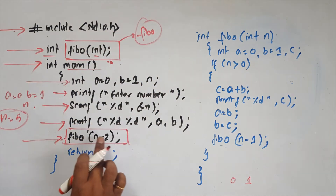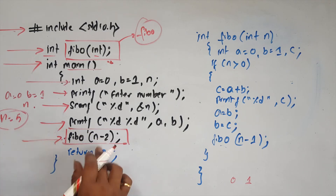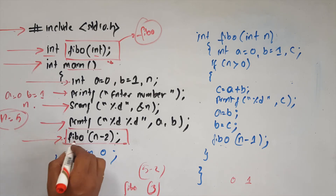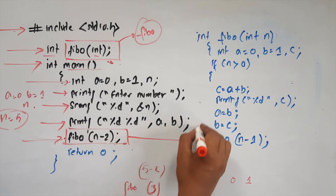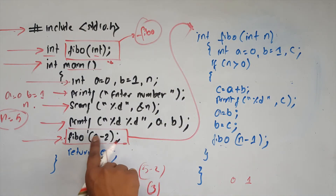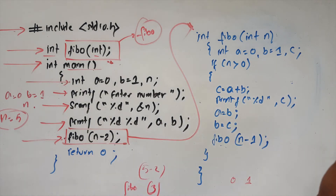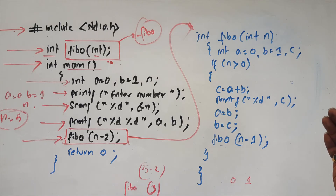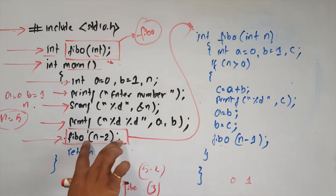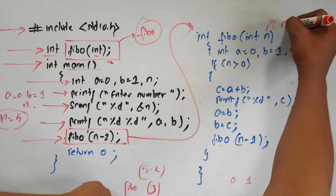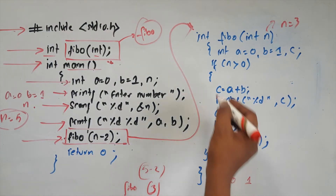If you call fibo with n minus 2, n minus 2 is the integer. If n is 5, then 5 minus 2 is 3. That means n minus 2 gives 3. To print 5 terms we use this example. There is n minus 2. If the term is 7, the term decreases to 5, then 3.